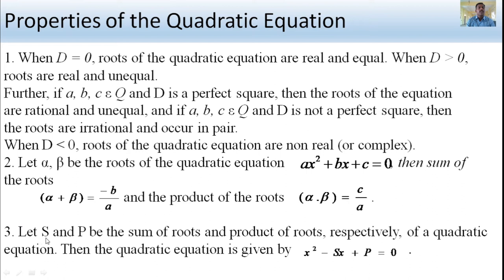The third property: let S be the sum of the roots and P be the product of the roots of a quadratic equation. Then the quadratic equation is given by x squared minus Sx plus P equals 0, where S is the sum and P is the product of the roots.